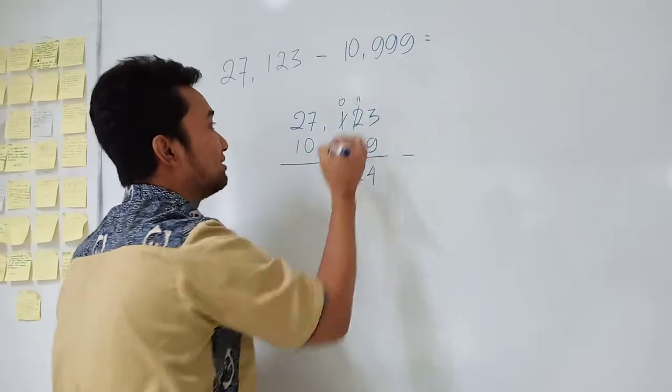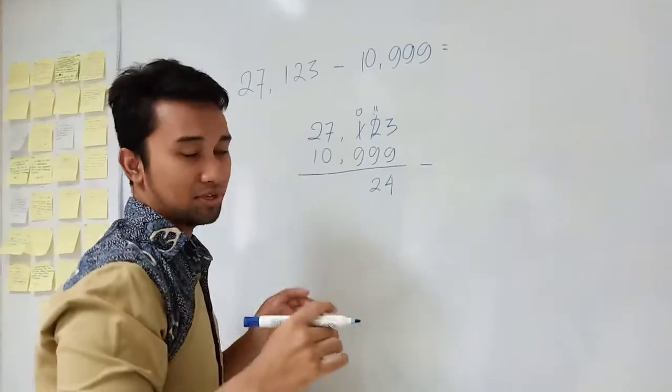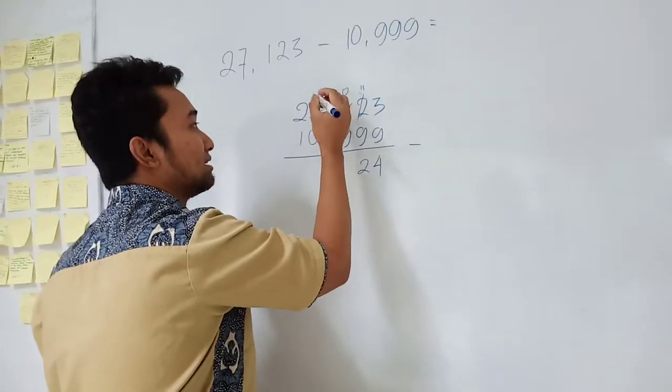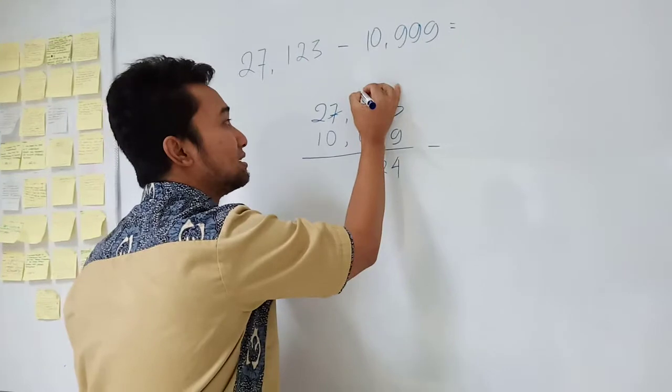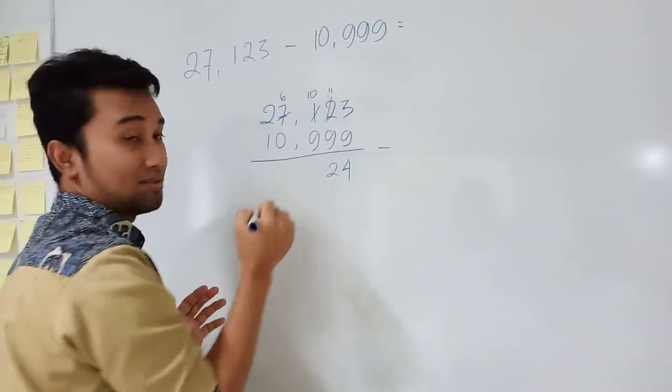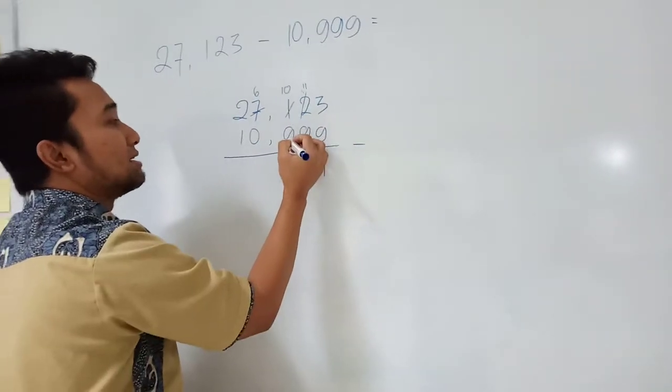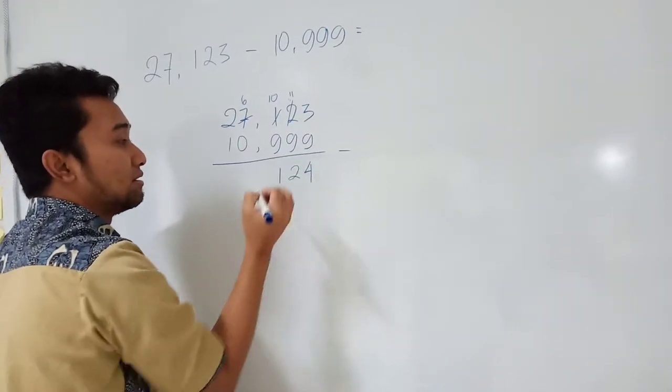Okay, now 0 minus 9, is it possible? No, you cannot, right? So you can borrow from this one and this is to be 10 and this is to be 6. Right? Because this is minus 1, minus 1, minus 1. And then 10 minus 9 is 1.